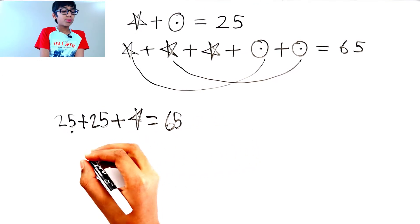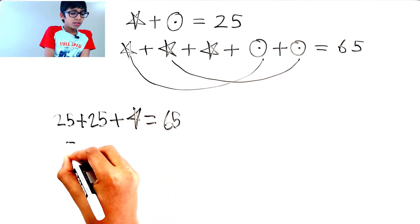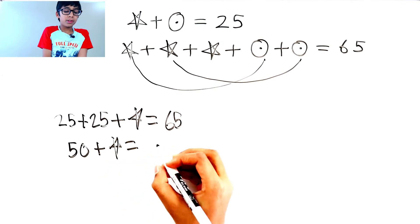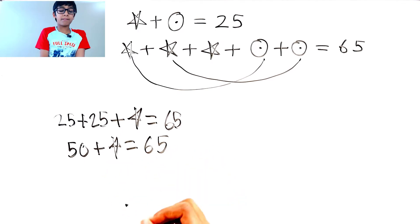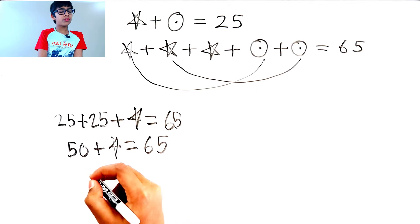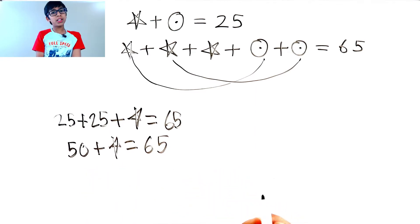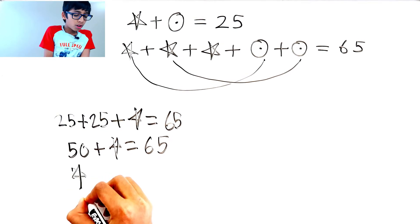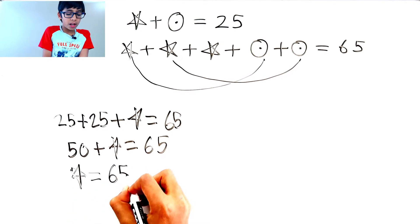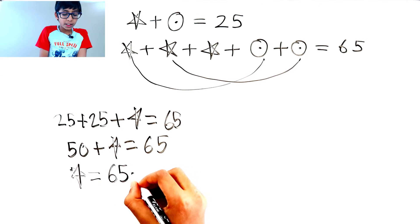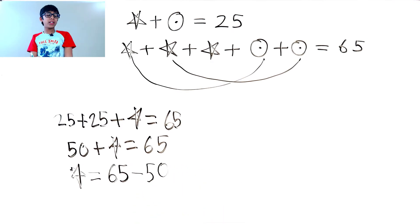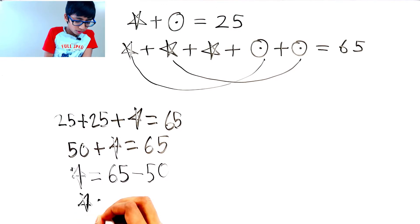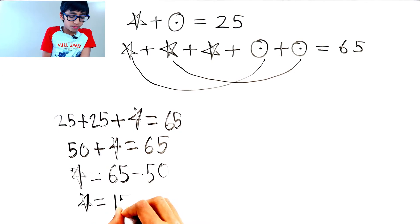25 plus 25 is 50. So 50 plus star equals 65. This is a plus 50 on the left side, so let's move it to the other side — it becomes minus 50. So star equals 65 minus 50. 65 minus 50 is 15. So star equals 15.